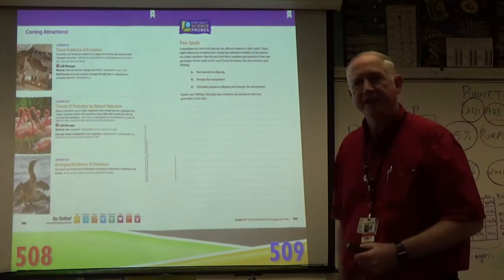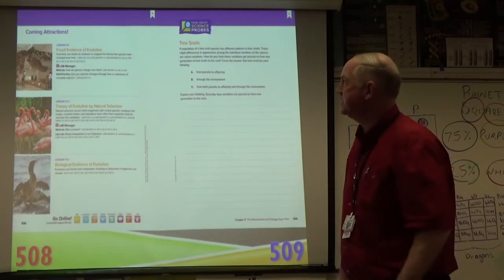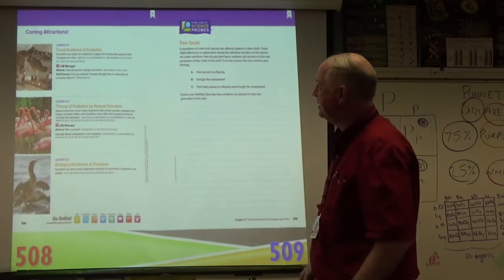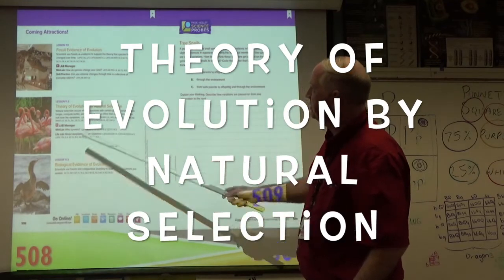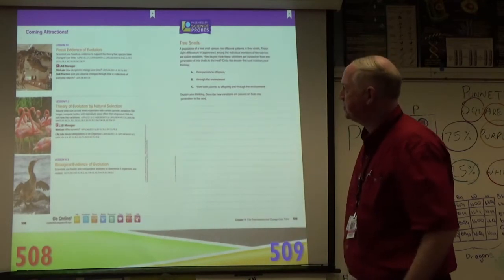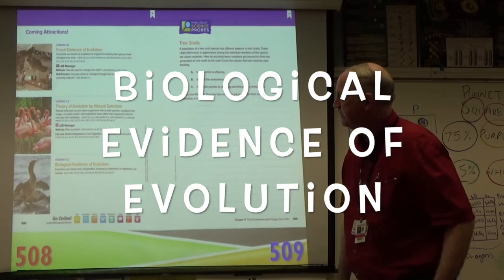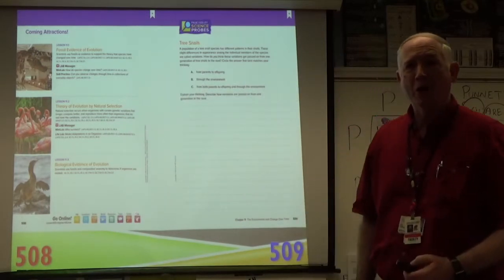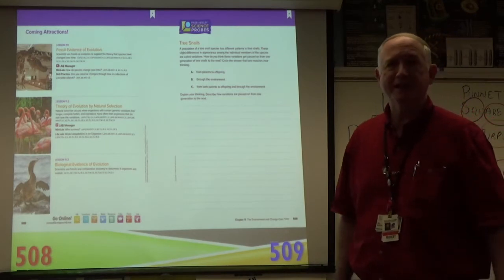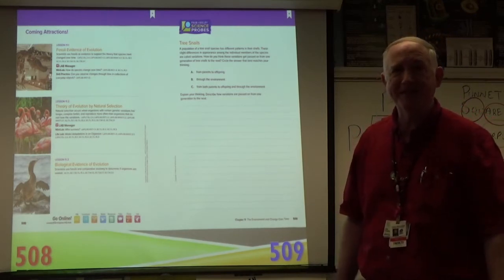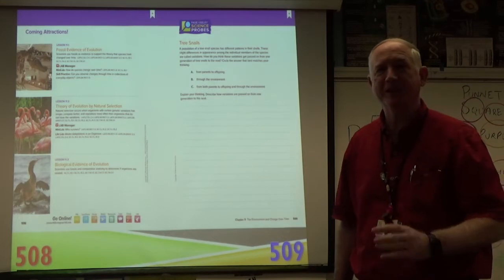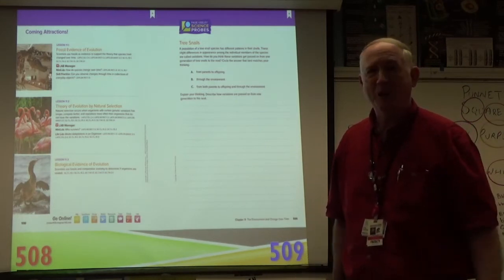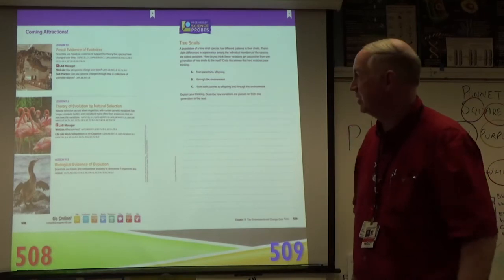This chapter is divided into three lessons: Lesson 1, Fossil Evidence and Evolution; Lesson 2, Theory of Evolution by Natural Selection; and Lesson 3, Biological Evidence of Evolution. I hope you find all of these interesting — I'm excited about teaching it, and I hope you're excited about learning out there somewhere comfortable, probably with a snack.